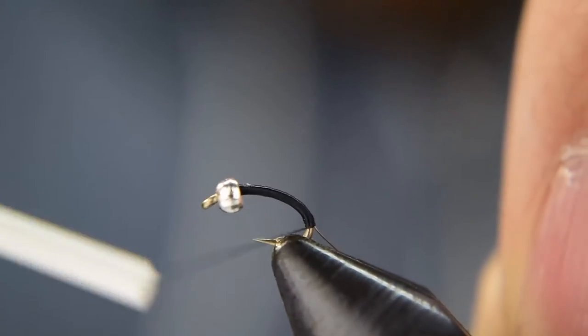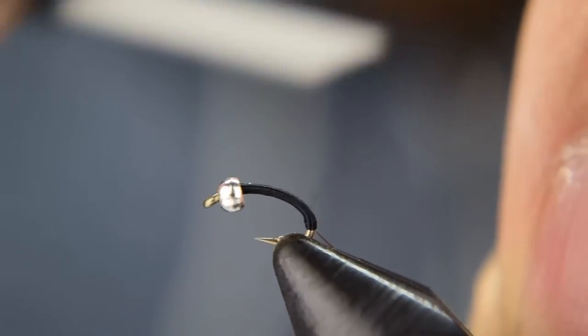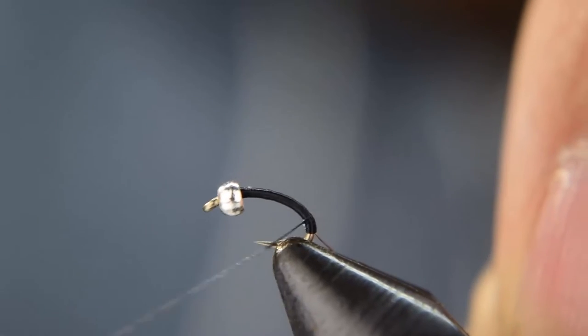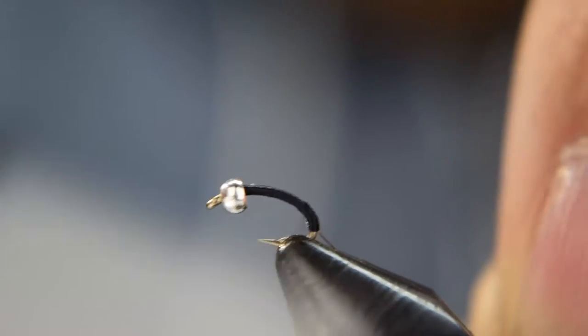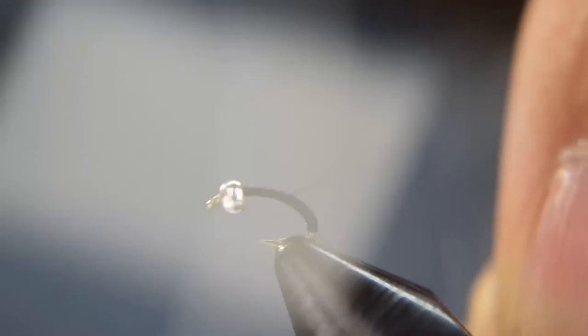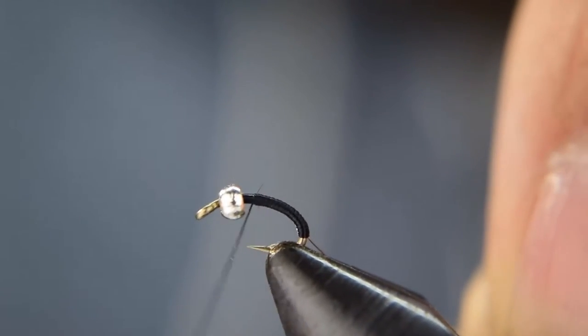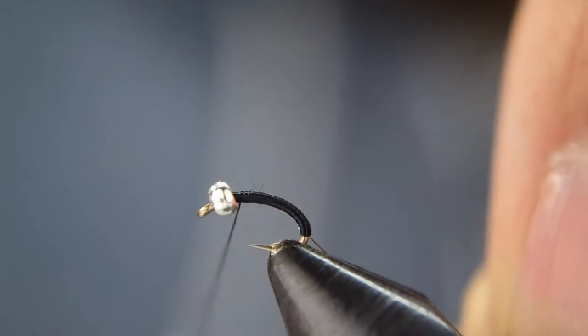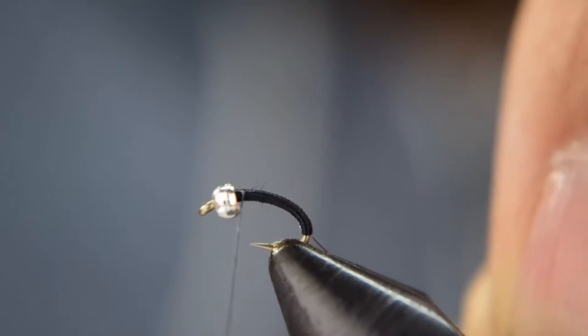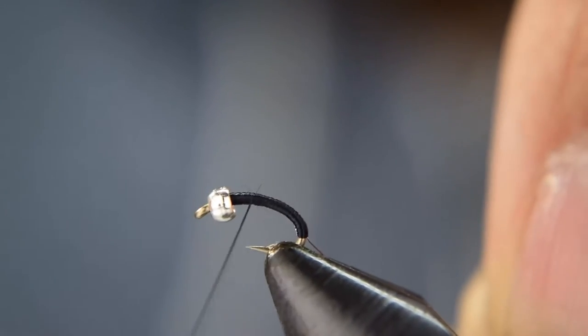You're going to want to go deep down into the bend here. We're going to go ahead and wrap back forward now. The body of the fly is all thread, so what we're going to do is build up a nice taper here. There's a little trick you can do to make sure that your body is nice and smooth, because we want that really nice smooth body.